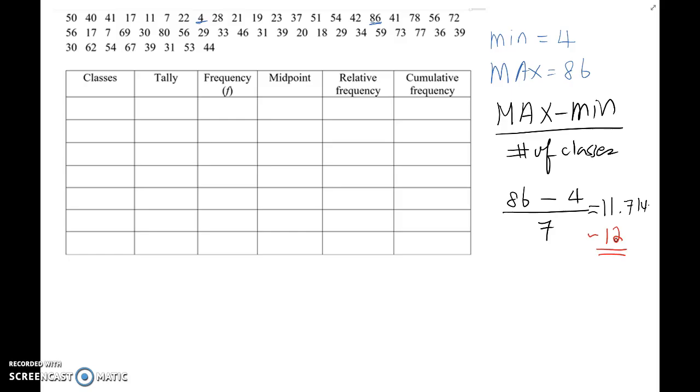This is a really important concept. So one more time, deciding class range: you calculate maximum minus minimum over number of classes. Whatever you get, you always round up. If you get whole number, still round up. So, take next number.